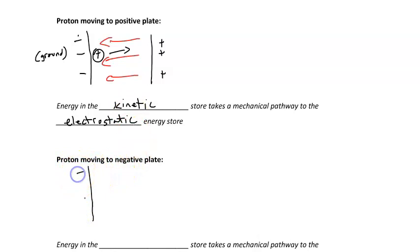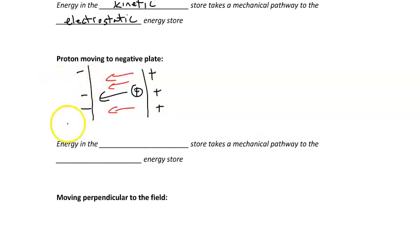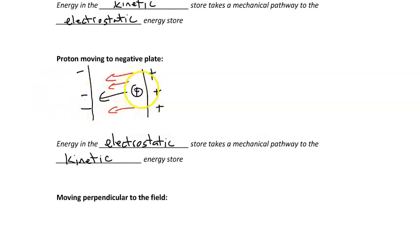If we take a look at that proton moving towards the negative plate — moving to the left where the field is moving towards the left — what we're going to see is the energy moving from an electrostatic store into a kinetic store. As the proton moves towards the negative plate, energy moves from the electrostatic store to the kinetic store in the form of motion. The negative plate is the ground for that proton.